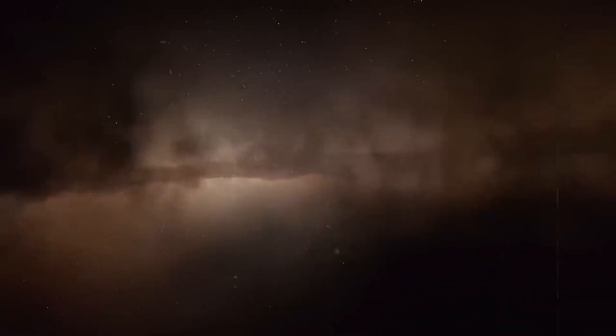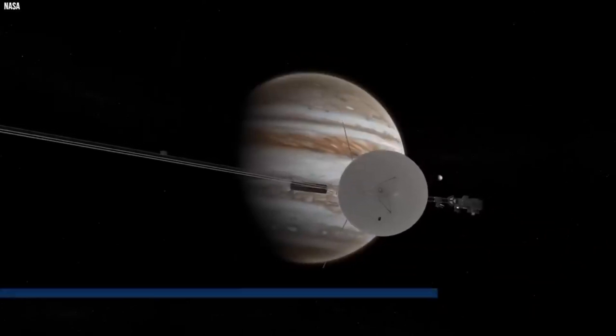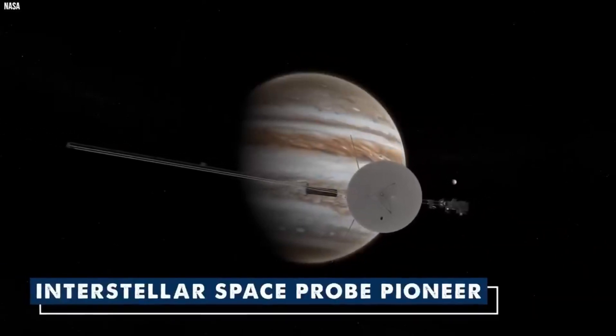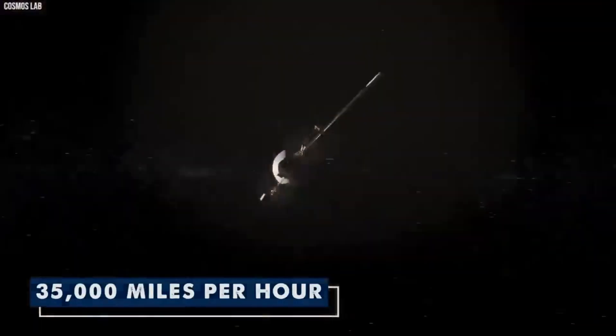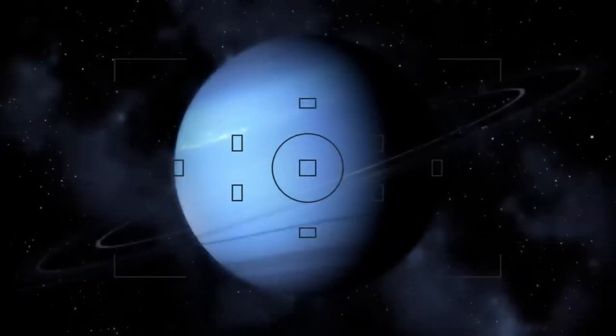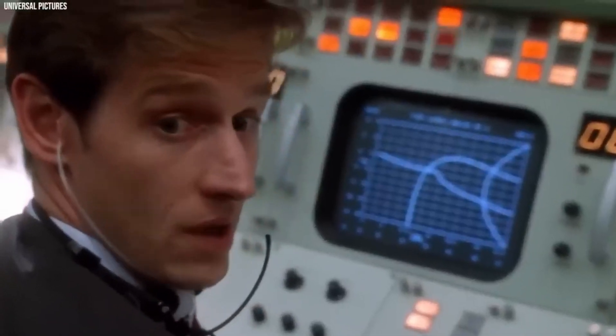The Voyager 1 spacecraft has revealed a scary discovery. Let's take a look back at the probe's achievements over the past 45 years. The Voyager twin probes' early observations of Jupiter and Saturn's moons were thought to be inactive and heavily pockmarked like our own moon, but have been nothing short of extraordinary.